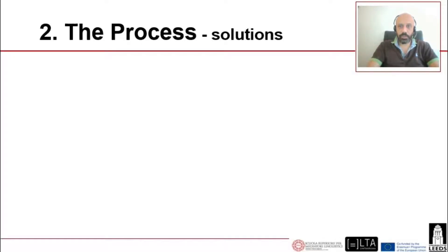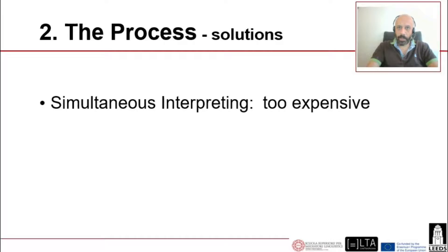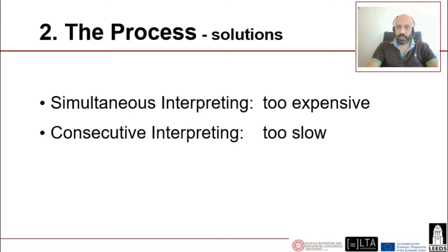Section two: the process. Several solutions have been tested in the past to solve communication problems among council delegates. In particular, for the needs of the current situation, they have been reconsidered. Simultaneous interpreting is too expensive and not easy to put into practice, despite the possibility of using breakout rooms in Zoom. Consecutive interpreting has been considered but was already deemed too slow in the past, so this solution was also rejected.